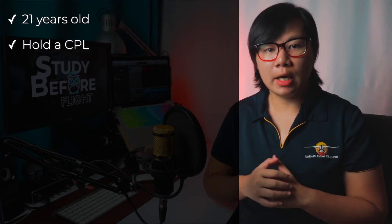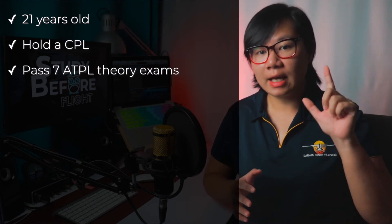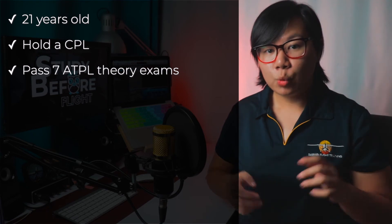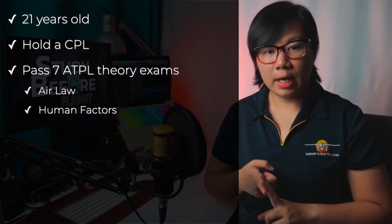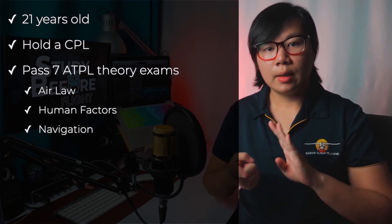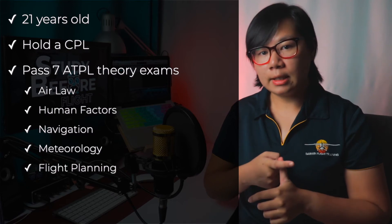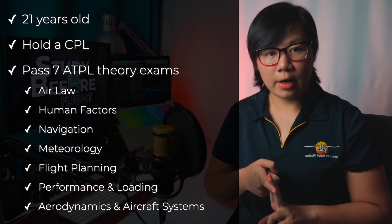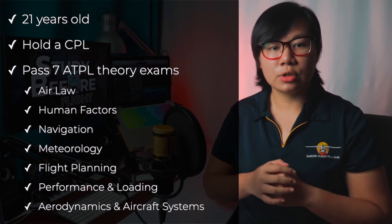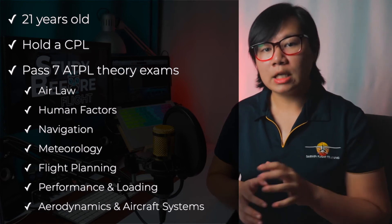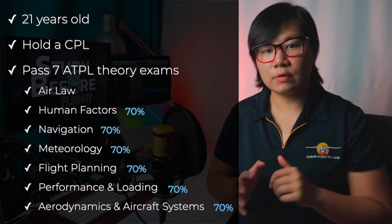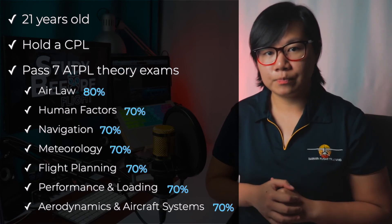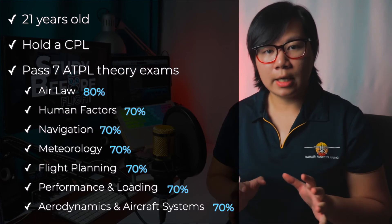To get the ATPL, you need to be at least 21 years old and hold a CPL. You must learn and pass seven ATPL theory exams: air law, human factors, navigation, meteorology, flight planning, performance and loading, and aerodynamics and aircraft systems. Similar to the CPL theory exams, the pass mark for all exams is 70%, except air law which is 80%.